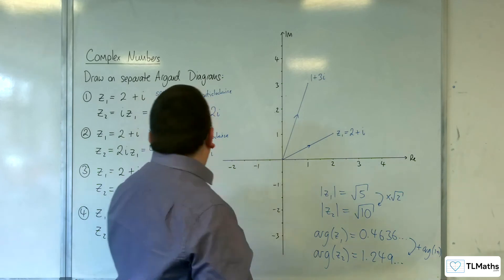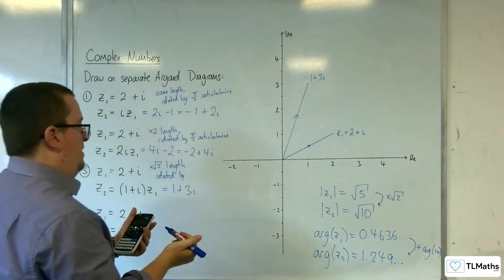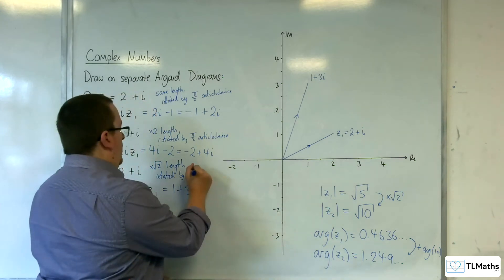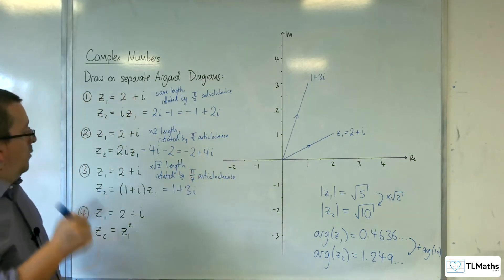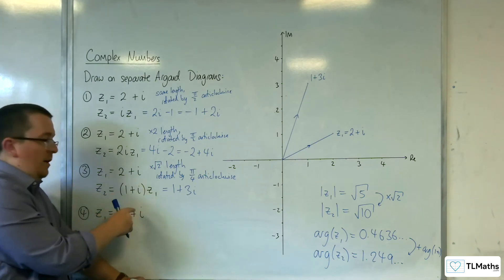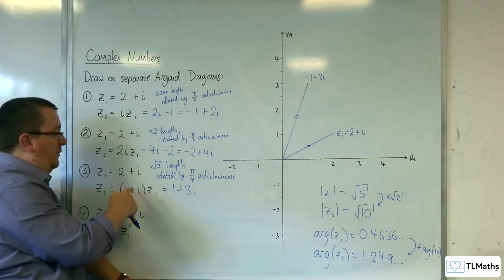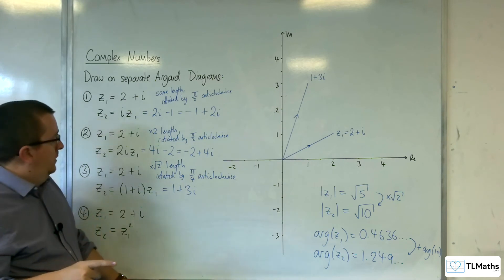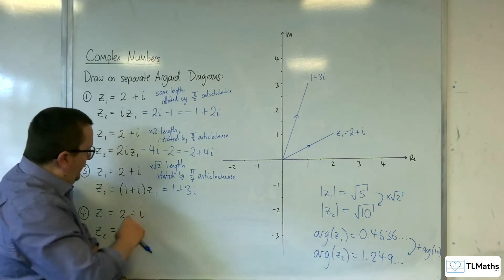So we've rotated by π over 4 anti-clockwise. It appears to be that what's happening is that when you multiply by a complex number, the length of that new complex number is the old one times the length of the one that you've multiplied it by. That's your new modulus. And the angle is the argument of those two added together.